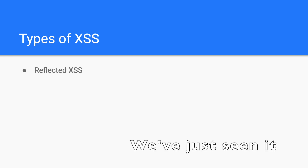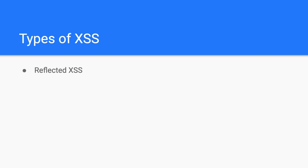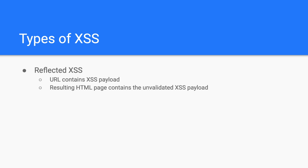There are three types of cross-site scripting. First, you have reflected cross-site scripting. As the name suggests, reflected cross-site scripting happens when the backend reflects untrusted user input into the HTML result page. In order to target a victim, the attacker must entice them to click on a malicious link so that the payload triggers on their web browser. The main points: the URL must contain the XSS payload and the resulting HTML page must contain the unvalidated cross-site scripting payload.